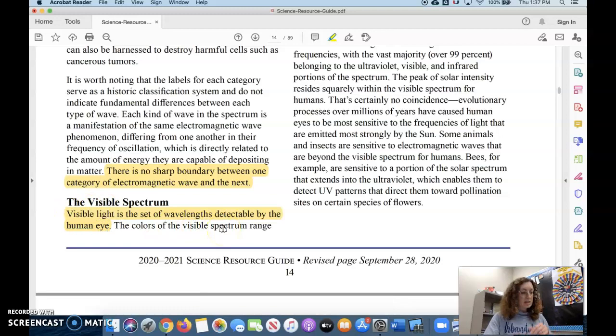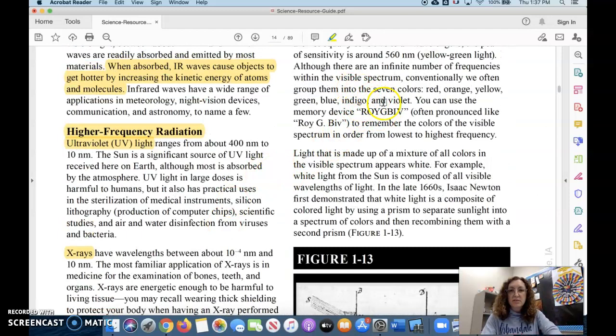When you were young, you probably memorized the colors of the rainbow. These are the seven colors of the visible spectrum. You can remember them with this ROYGBIV memory device, mnemonic device. Red being the lowest frequency, violet being the highest frequency wavelength.